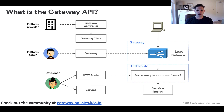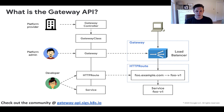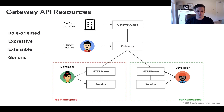This separation allows different roles to deploy and own that resource. It allows a cluster administrator to manage the Gateway and the policies attached to that Gateway, while individual development teams manage routing to their application on their own.